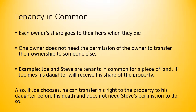One owner does not need the permission of the other owner to transfer their ownership to someone else. Each owner can do whatever they want with their ownership of the co-owned land — they can give it to somebody else without the other owner's permission. For example, Joe and Steve are tenants in common with a piece of land. If Joe dies, his daughter — his heir — will receive his share of the property. It doesn't go to Steve.